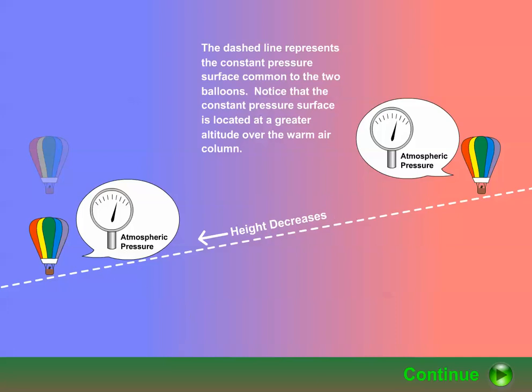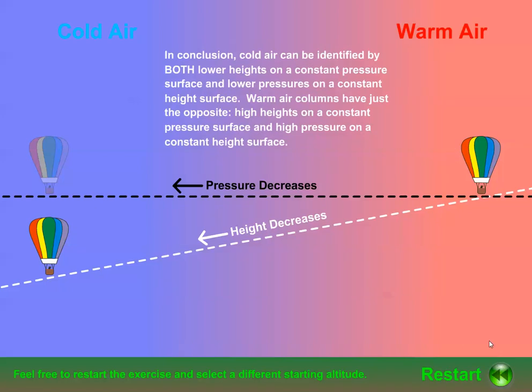Furthermore, at the altitude of the balloon in the warm column, the pressure is less in the cold air column. So cold air can be identified by either lower heights on a constant pressure surface or lower pressures on a constant height surface. Warm air columns have just the opposite: high heights on a constant pressure surface and high pressure on a constant height surface.